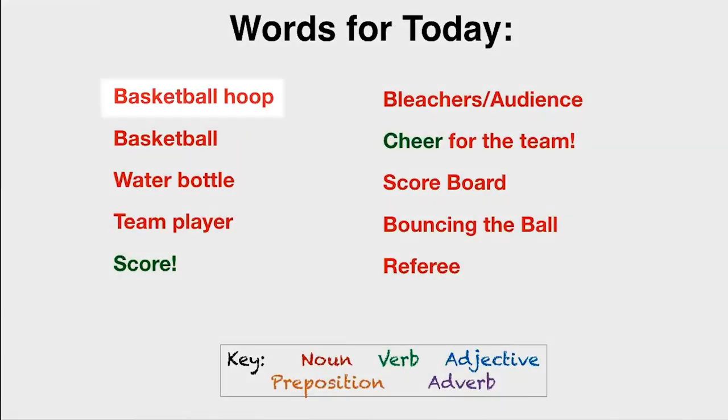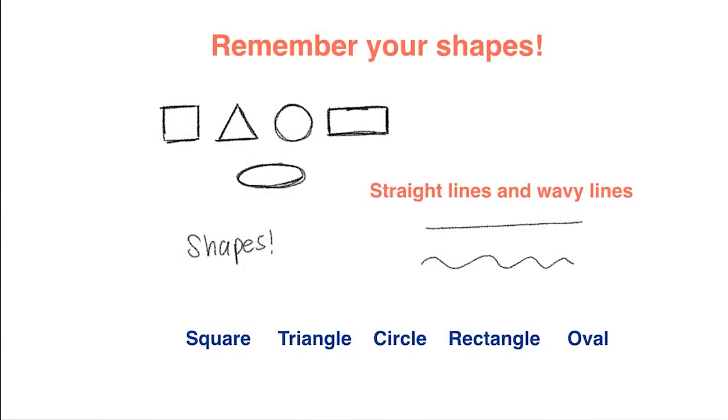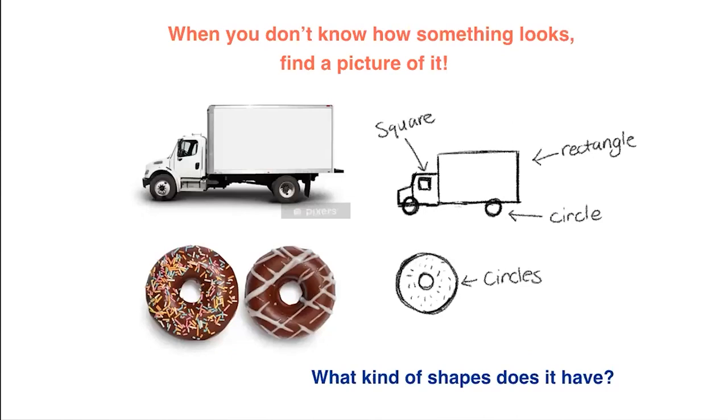Today's words are basketball hoop, basketball, water bottle, team players, score, bleachers and the audience, cheering for the team, a scoreboard, bouncing the ball, and a referee. Always remember your shapes so you can help me draw the picture without me having to see what you're doing. You describe the shape that it is, and when you don't know how something looks we can find a picture of it, a picture reference, and figure out what kind of shapes it has.